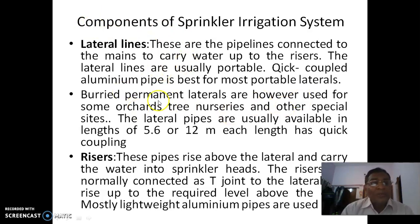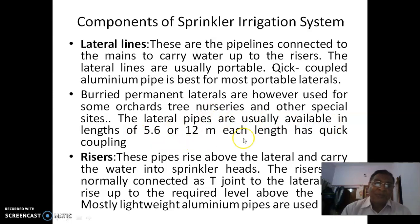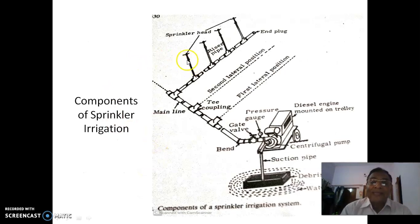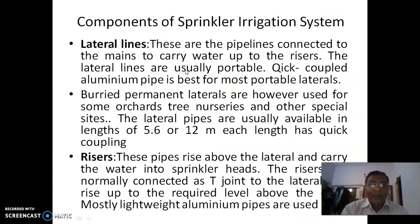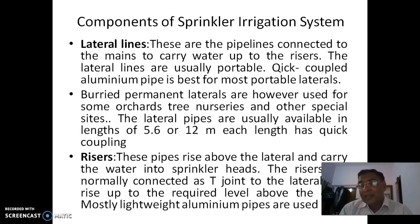Buried permanent laterals are used for some orchards, nurseries, and similar permanent crops where you can install the lateral pipelines permanently. Lateral pipes are usually available in lengths of 5.6 or 12 meters each. Risers are pipes that rise above the lateral and carry water into the sprinkler heads. They are normally connected as T-joints to the lateral and rise up to the required level above the crop. Lightweight aluminum pipes are mostly used for both laterals and risers.